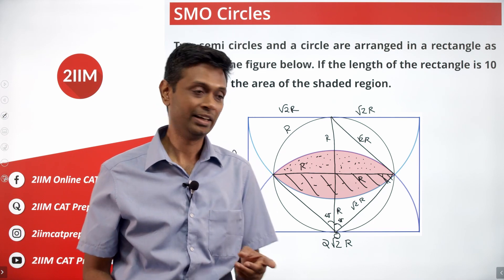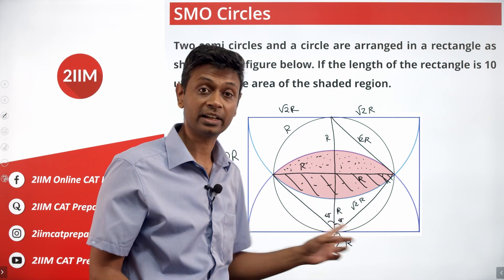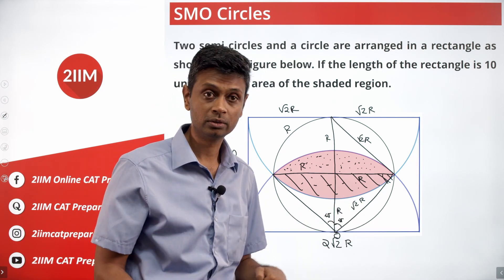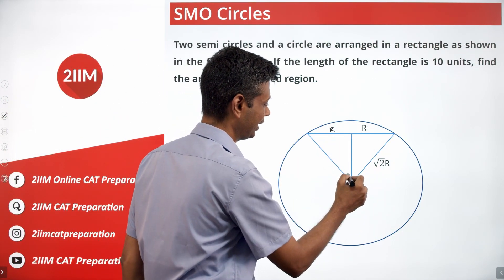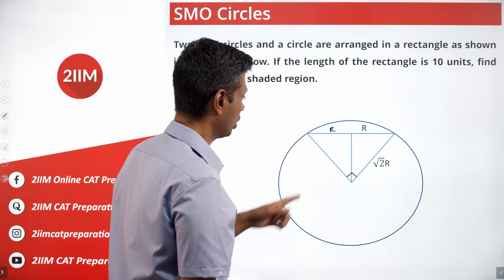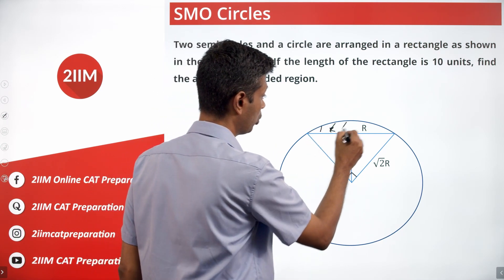It is not just any right angle triangle. It is a beautiful isosceles right angle triangle with side root 2R. Or quite simply, you have root 2R, R, R, R, 90 degrees.